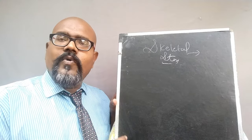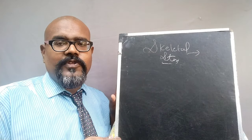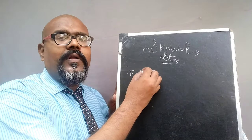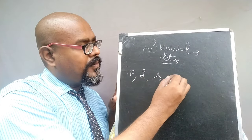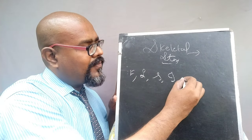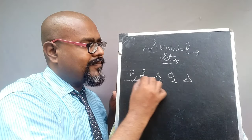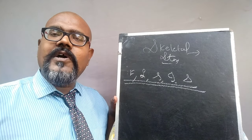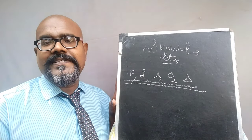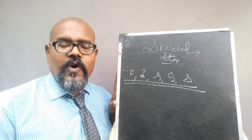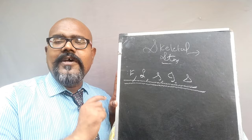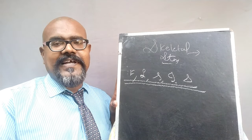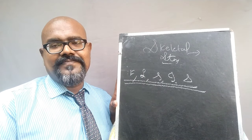That is all about the classification of bones according to size: flat bone, long bone, short bone, irregular bone, and sesamoid bone — five different classifications of bones in the skeletal system. Hope you understand. In the next class, we are going to see the joints of the skeletal system. Thank you.